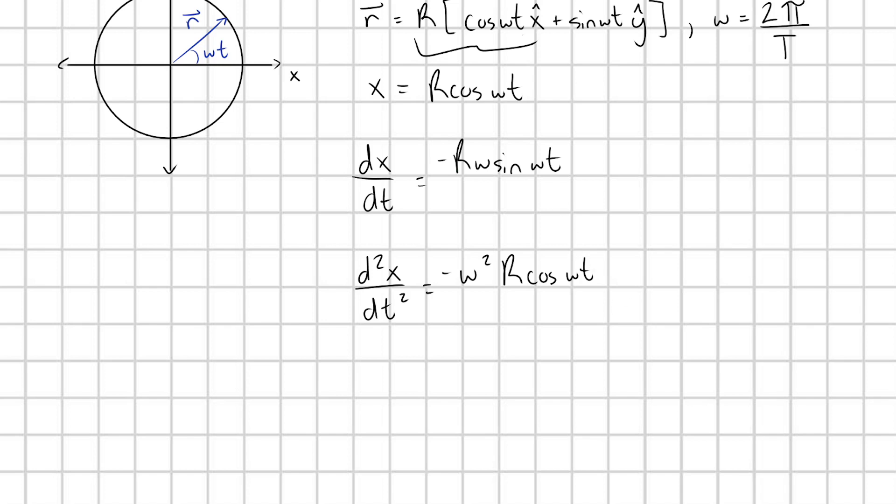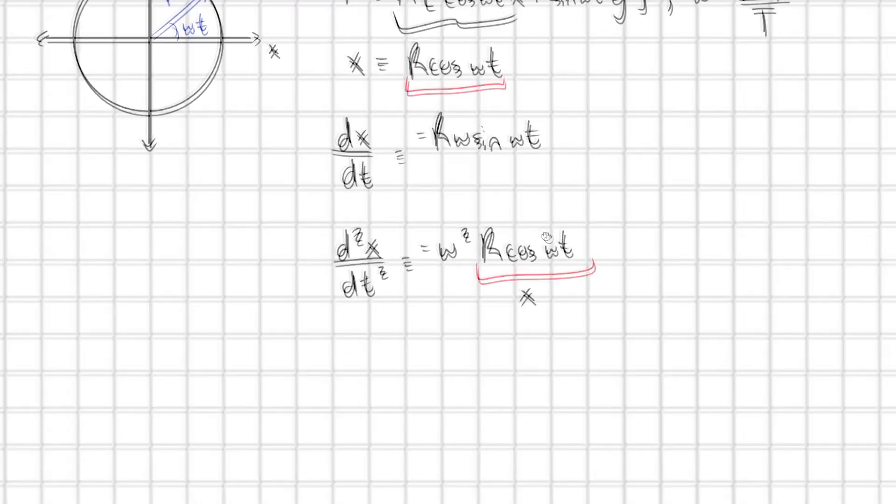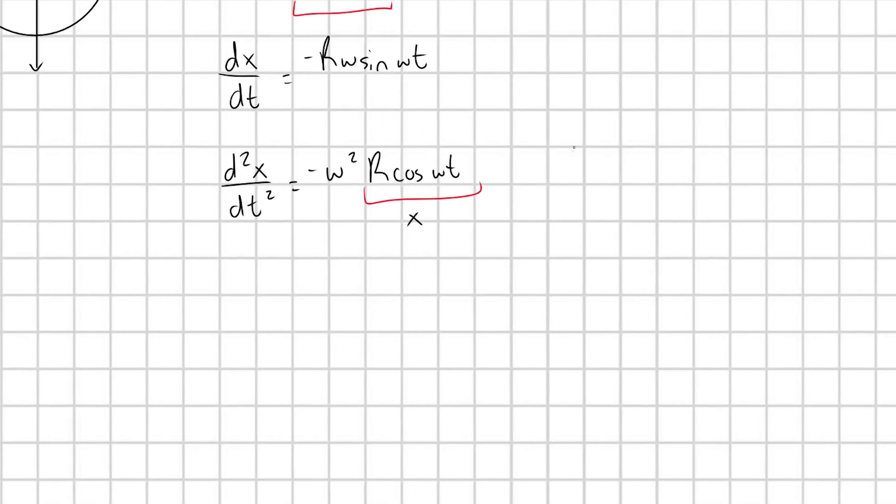But look, I can now go in and I can plug this x back in. This r cosine omega t matches with x. So I'm just going to plug that in. And we get to this really nice expression. I have d squared x dt squared is equal to minus omega squared x.